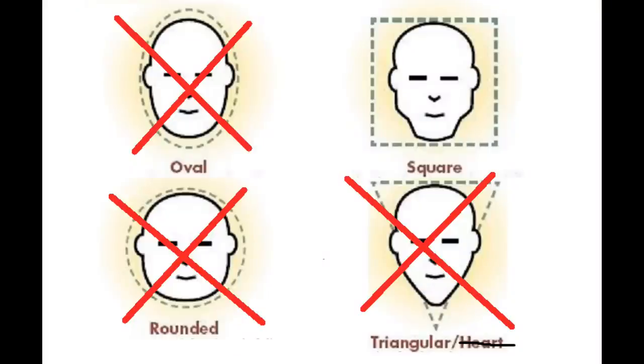If your face is square, due to its angular nature and construction you want to go with a hairstyle that actually softens those hard lines. Here's a great example of what not to do: this gentleman has a fairly square face, and combined with a tight angular hairstyle he looks like Herman Munster.